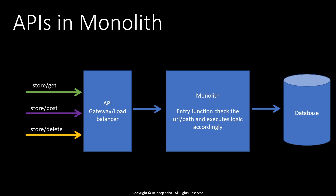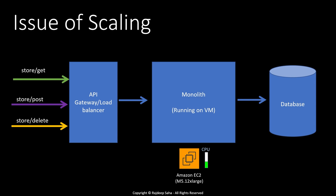Now let's talk about scaling a monolith. Let's say our monolith is running on a virtual machine. Since you are running this huge program as one executable, you need a sizable EC2 instance — in this example, an m5.12xlarge. We have three different traffic patterns coming in: store/get, store/post, and store/delete. Store/get retrieves information about a product, store/post posts information about a product, customer, or purchase, and store/delete deletes information from the database.